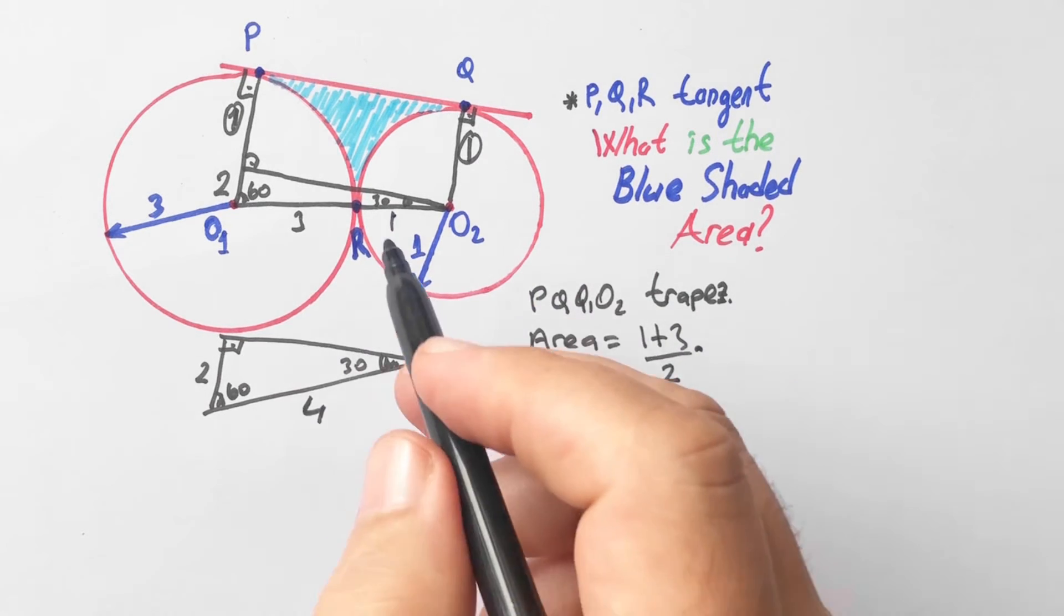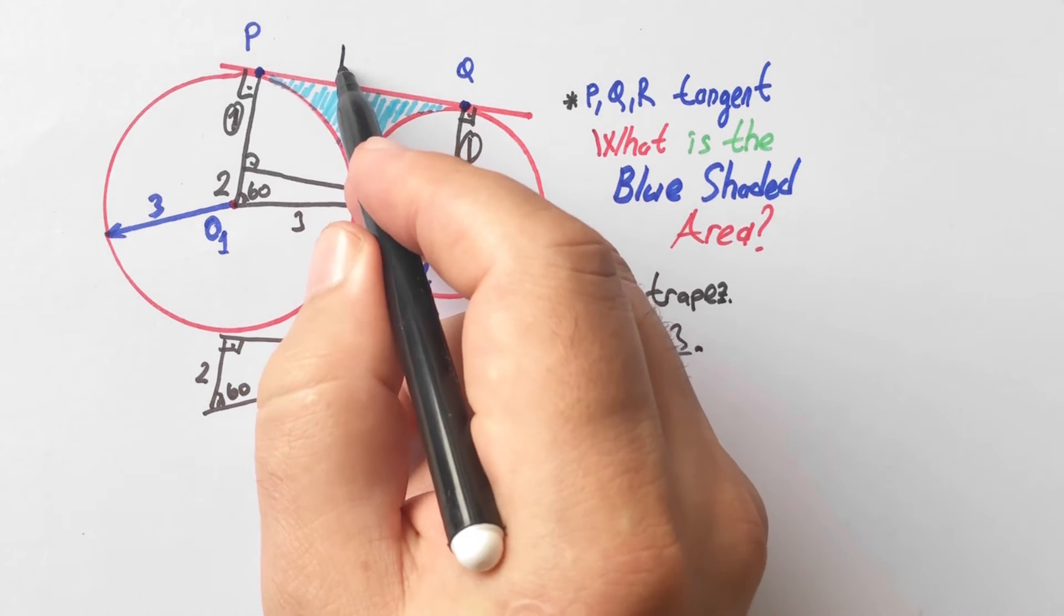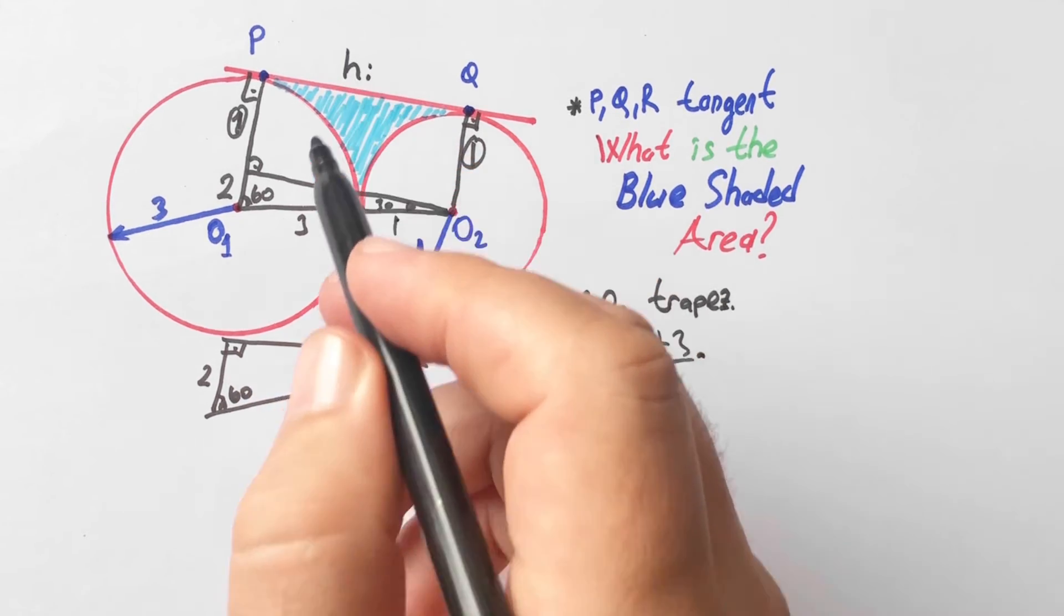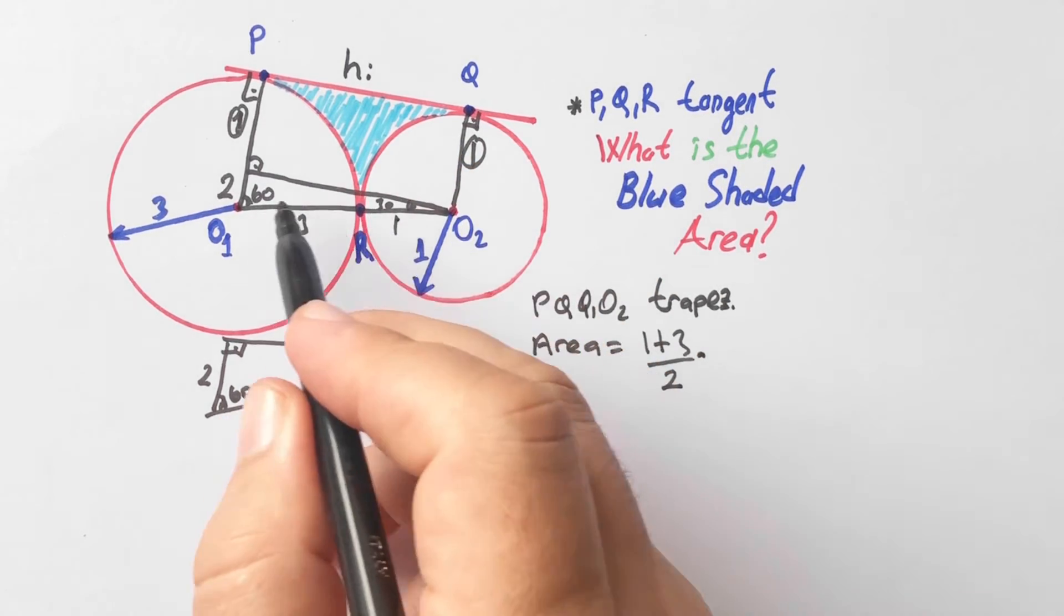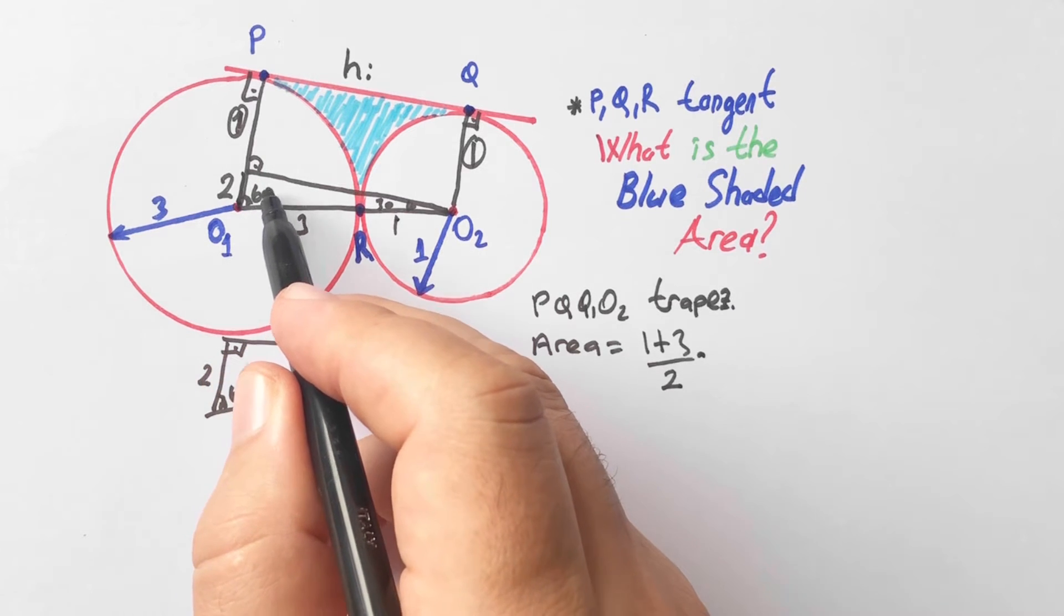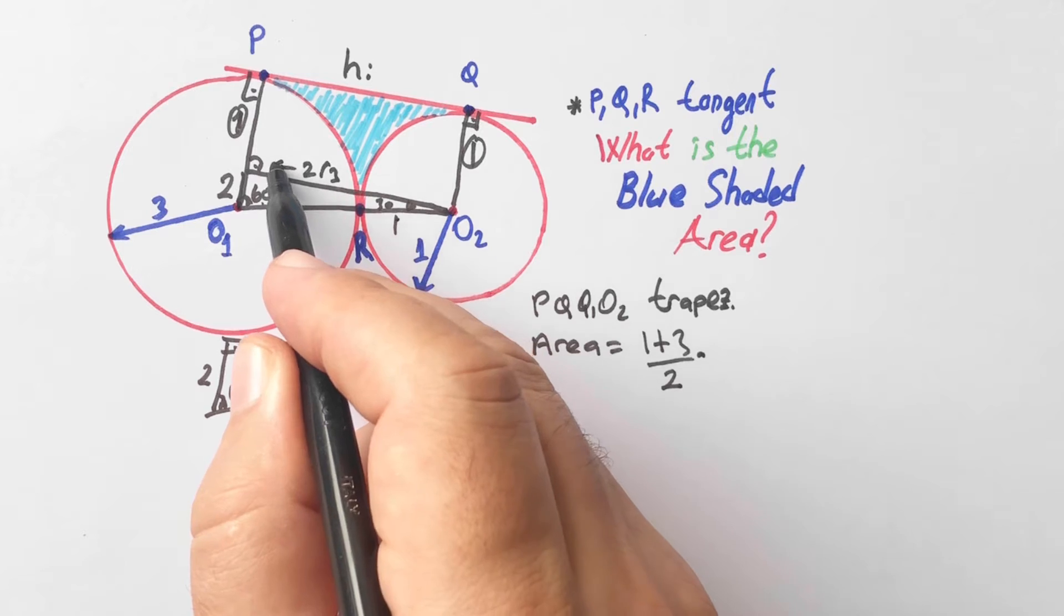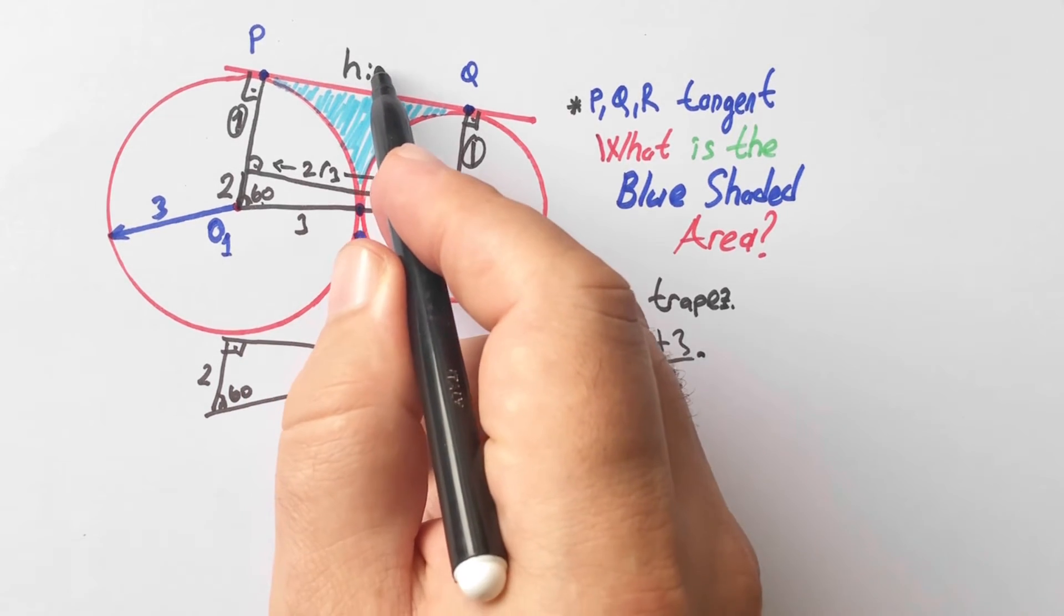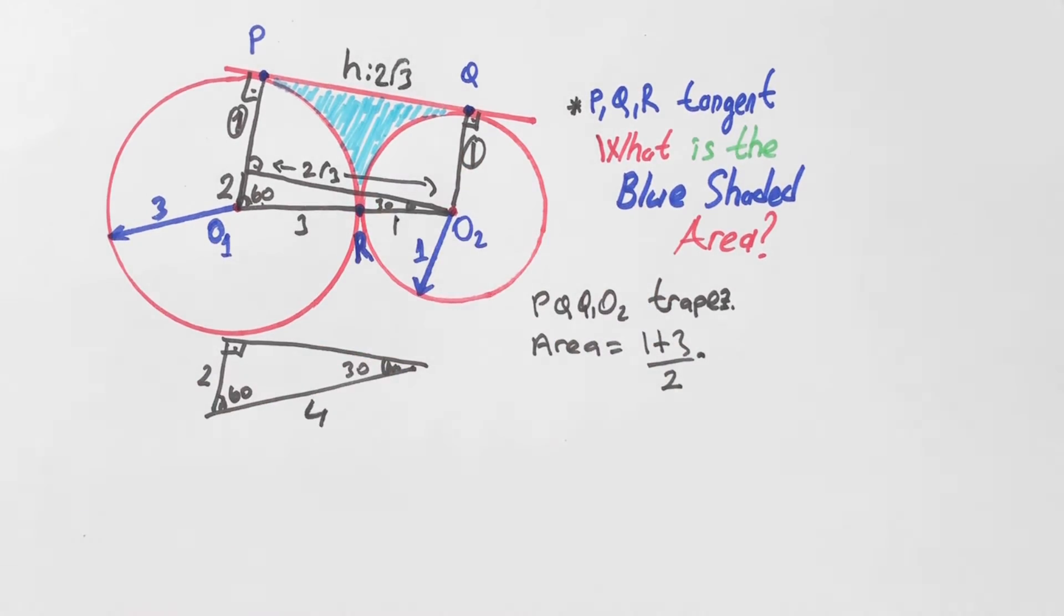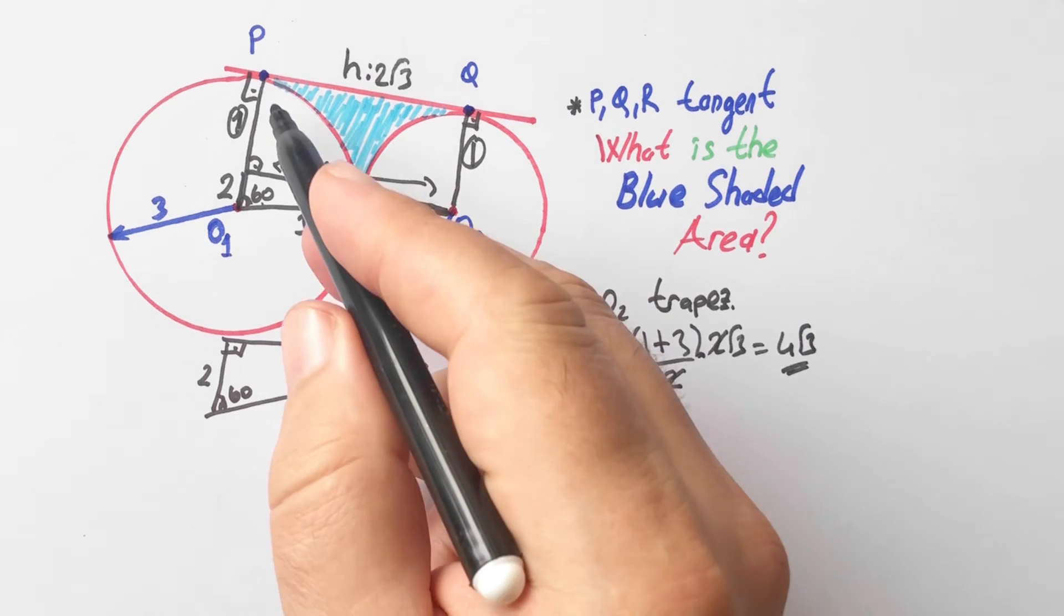How we can calculate the trapezoid area? Area is equal to, let's write the formula: base 1 plus base 2 over 2 times height. Height is across the 60 degrees also, so here is 2√3. Height is equal to √3. Let's plug in the equation. Area is going to be 4√3.